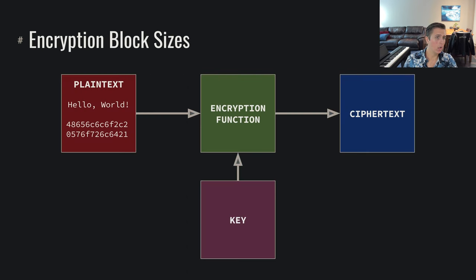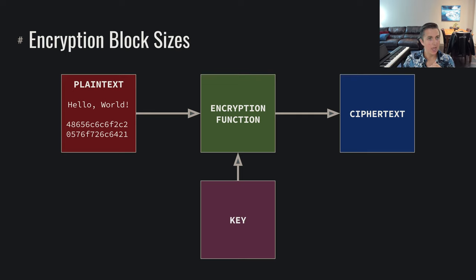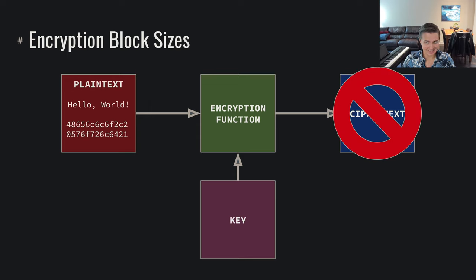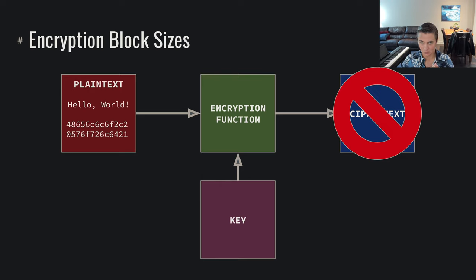Let's look at what encrypting a block of data means. If we're trying to encrypt 'hello world' and we have a block cipher like AES with a 128-bit (16-byte) block size, and our message is 13 bytes long, it's not going to work — we can't encrypt 13 bytes because this encryption function works on exactly its block size of 16 bytes.